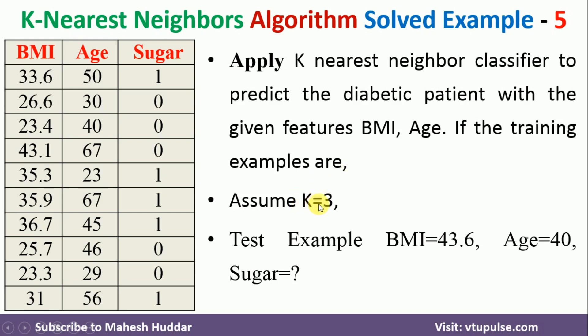Assuming the value of k is equal to 3, that is 3 nearest neighbors, we want to classify the new example with BMI equal to 43.6 and Age equal to 40 into either 1 or 0 — that is, the patient is having sugar or no sugar.